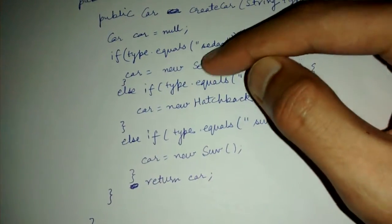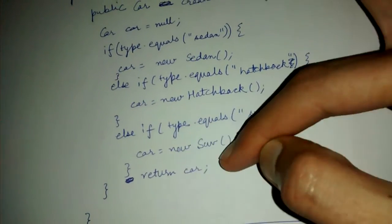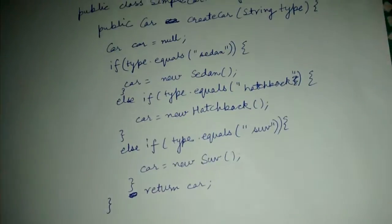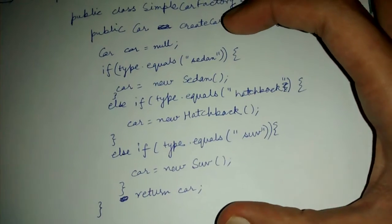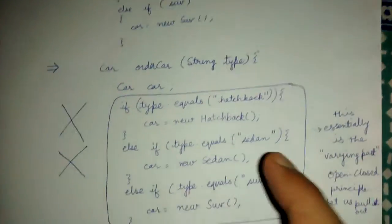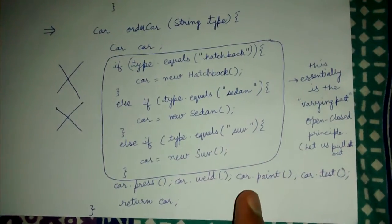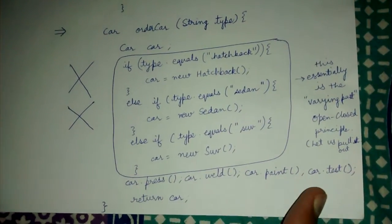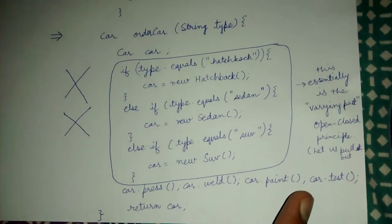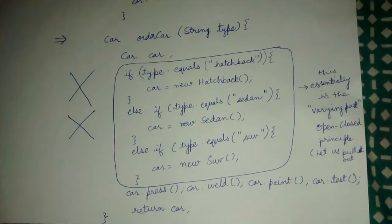We have the createCar method, and this basically has the logic: if type equals sedan we create a sedan, if type equals hatchback we create a hatchback, if type equals suv we create suv, and we then return the car. This is the createCar method, it is having the varying part.